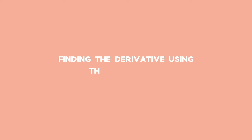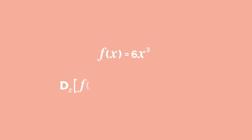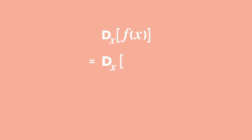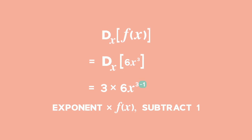Example 1: Finding the derivative using the power rule. If f of x equals 6 times x cubed, find the derivative of f of x with respect to x. Solution: The derivative of f of x equals the derivative of 6 times x cubed, which equals 3 times 6x to the power of 3 minus 1, giving 18x squared.